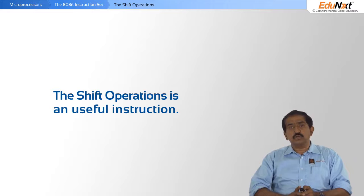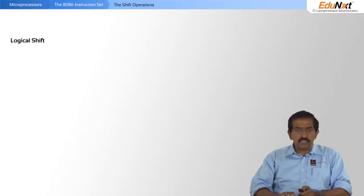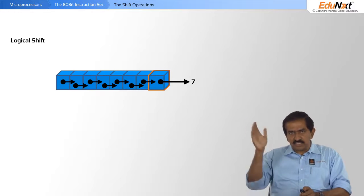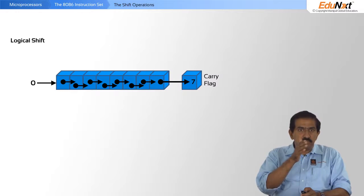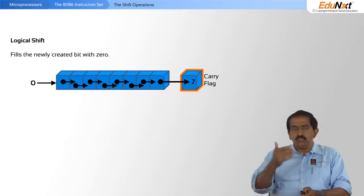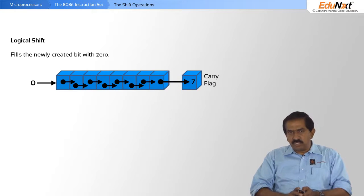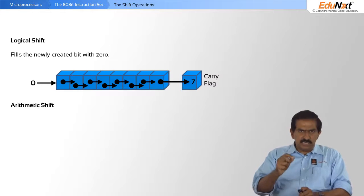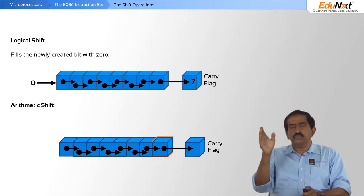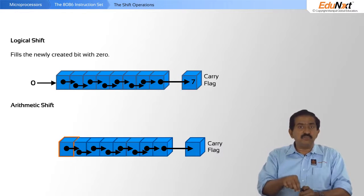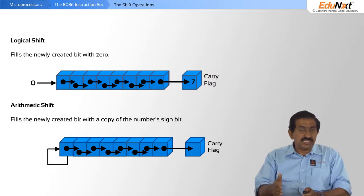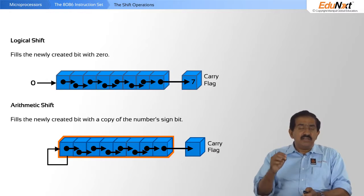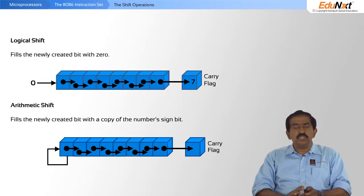Another useful instruction is the shift operation, and there are various kinds. In a logical shift, the highest bit B7 moves into the carry flag, and bit B0 is filled with zero. The arithmetic shift is slightly different: B7 still moves into the carry flag, but B0 is not filled with zero — it just repeats itself. So if you performed eight arithmetic shift operations, all eight bits would take the value that bit 0 had initially.